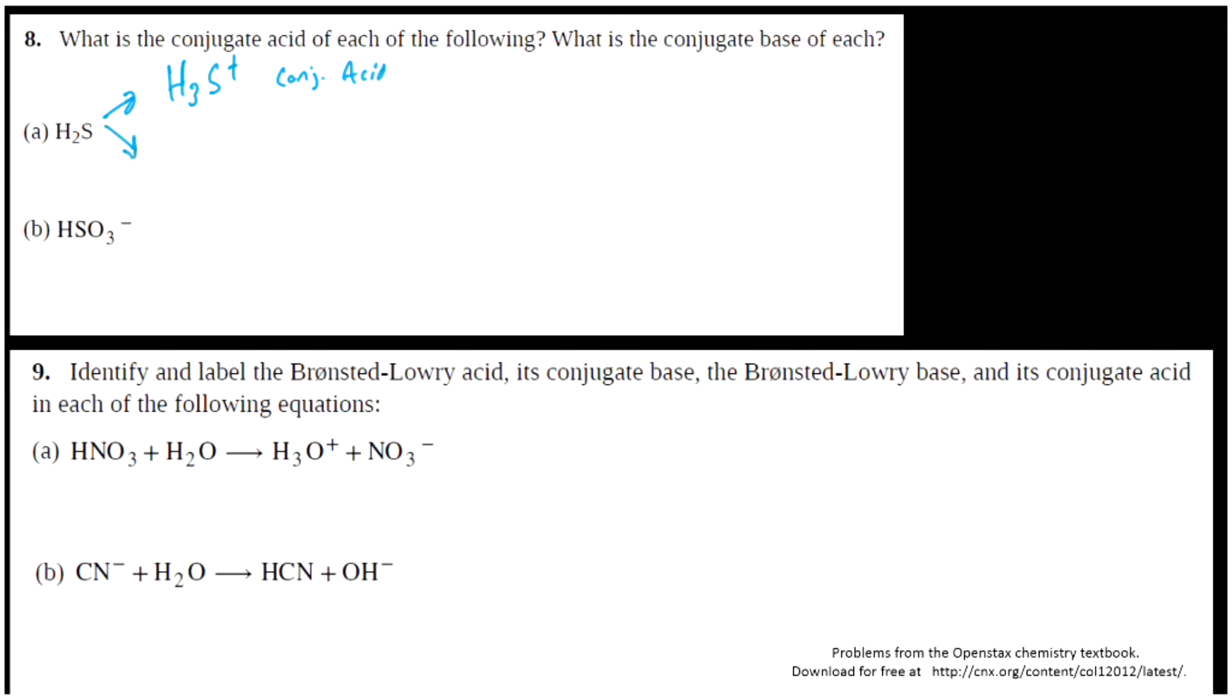On the other hand, losing a hydrogen would make HS-, the conjugate base. HSO3-, similarly, if I wanted to make a conjugate acid, I add a hydrogen and it becomes H2SO3. It's neutral because it was negative one and it gained a proton. If it loses a proton to become its conjugate base, it's HSO3 2-. And now it's two minus because it's lost something that was positive.